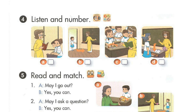Page 43, Lesson 2, Activity 4. Listen and number. 1. May I come in? Yes, you can. 2. May I open the book? Yes, you can. 3. May I sit down? No, you can't.